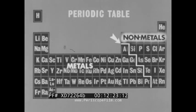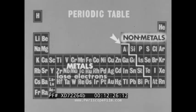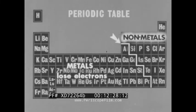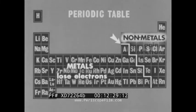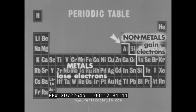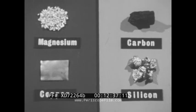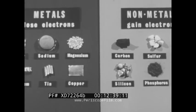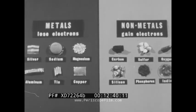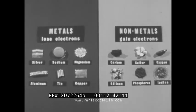Metals and non-metals differ in that metals tend to lose electrons, whereas non-metals tend to gain or share electrons. This one difference helps to explain the physical and chemical properties of nearly all metals and non-metals — the elements that make up all the materials of our physical world.